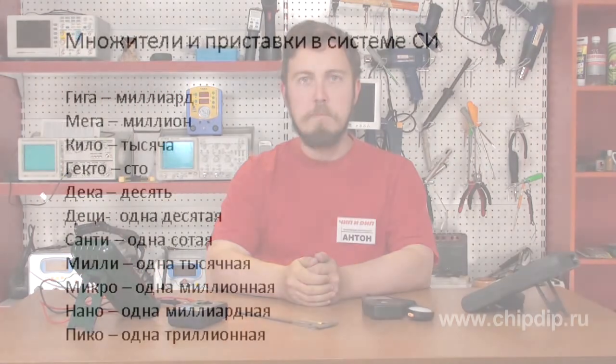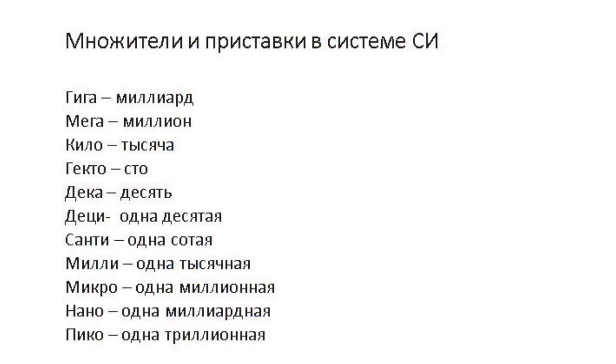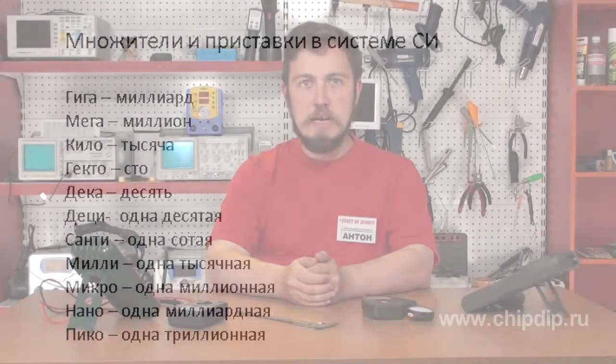Multipliers and prefixes in the SI system: Giga — billion; Mega — million; Kilo — one thousand; Hecto — one hundred; Deca — ten; Deci — one tenth; Centi — one hundredth; Milli — one thousandth; Micro — one millionth; Nano — one billionth; Pico — one trillionth. These marking and notation conventions have found wide application in various fields of electronics.